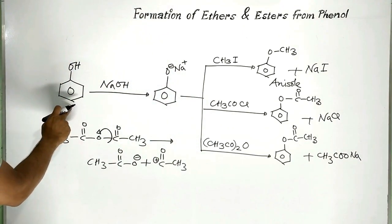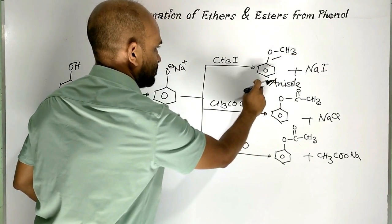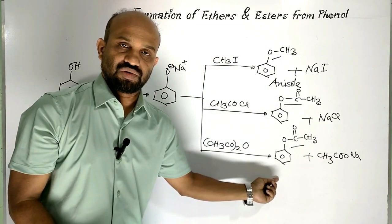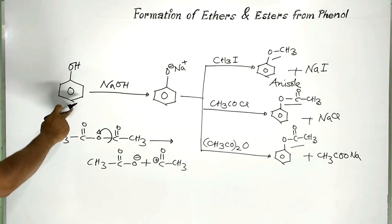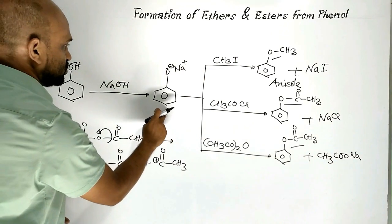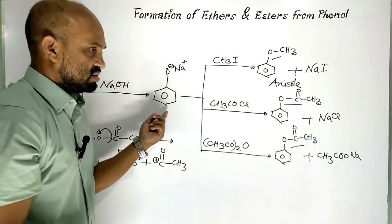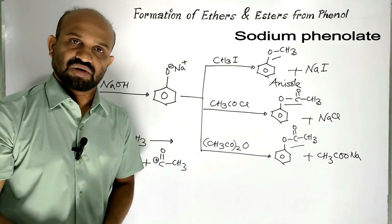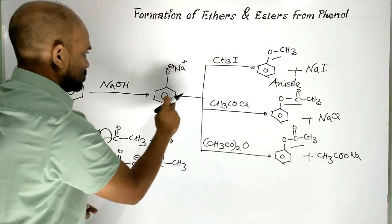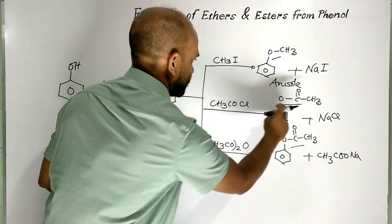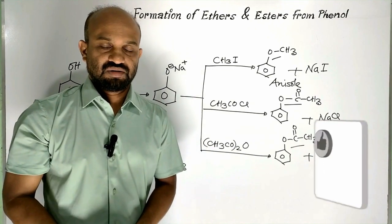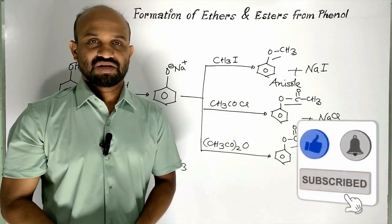So from phenol, ethers and esters can be formed. First of all, phenol is converted to the salt of phenol — sodium phenoxide, also known as sodium phenolate or sodium phenate. This sodium phenolate is then treated with an alkyl halide to form an ether, with ethanoyl chloride to form an ester, or with acetic anhydride to form an ester. This is all about formation of ethers and esters from phenol.